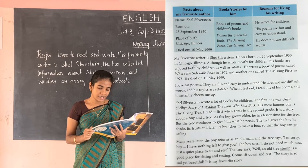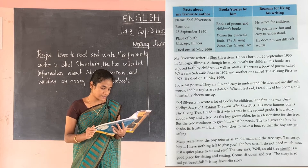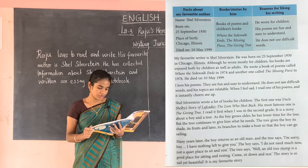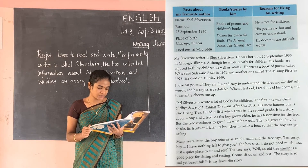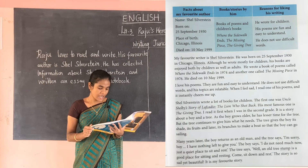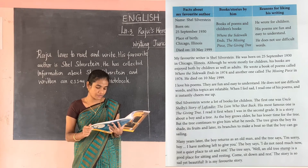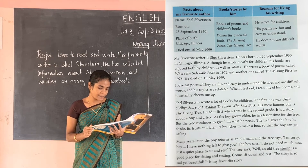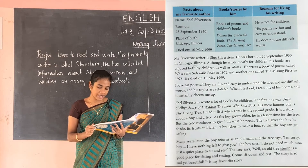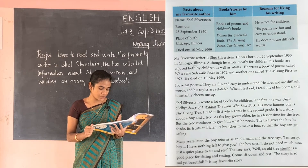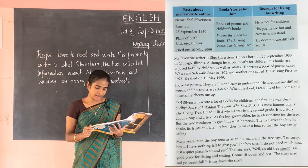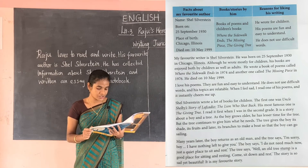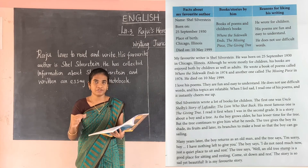As the boy grew older, he had less time for the tree, but the tree continued to give him what he needs. The tree gives the boy its shade, its fruit, and later its branches to make a boat so that the boy can go sailing. Many years later, the boy returned as an old man and the tree says, 'I am sorry boy, I have nothing left to give you.' The boy says, 'I do not need much now, just a quiet place to sit and rest.' The tree says, 'Well, an old tree stump is a good place for sitting and resting — come, sit down and rest.' This story is so sad and beautiful — it is my favorite story.